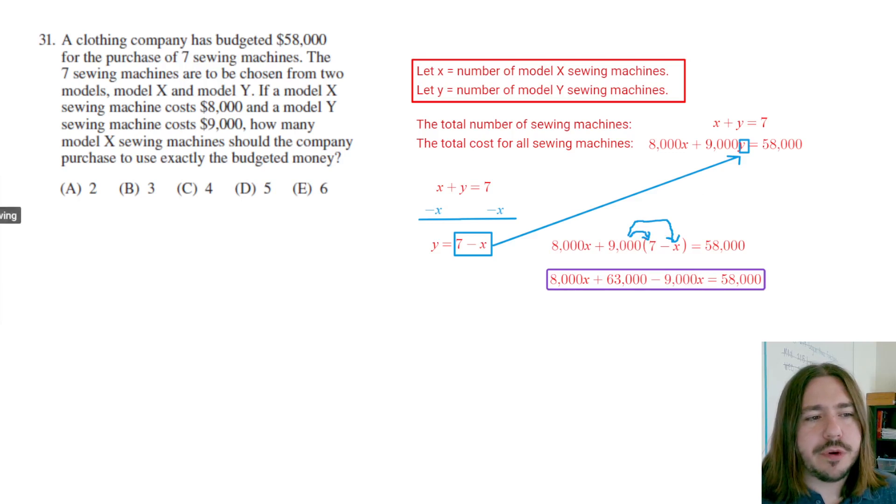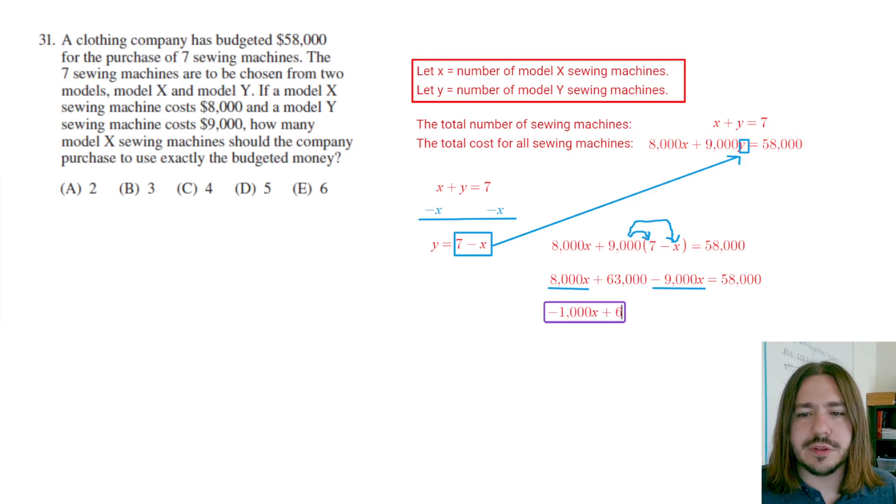After use of the distributive property, we want to combine like terms, and we have two like terms over here on the left-hand side of the equation, 8,000 X minus 9,000 X. If you're not sure what 8,000 minus 9,000 is, again, put it in the calculator. This one I feel like I've got a pretty good handle on. It's going to be negative 1,000. So negative 1,000 X plus 63,000 equals 58,000.